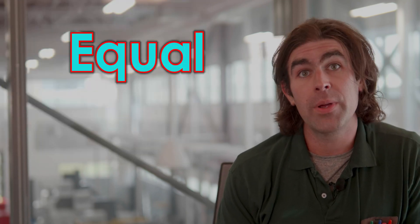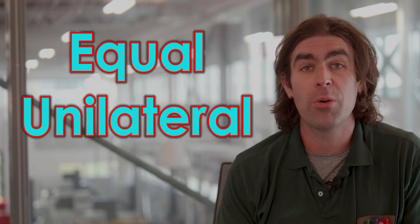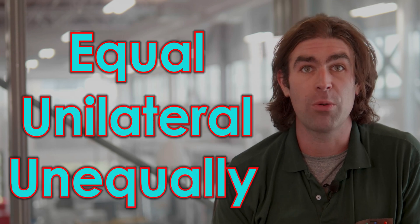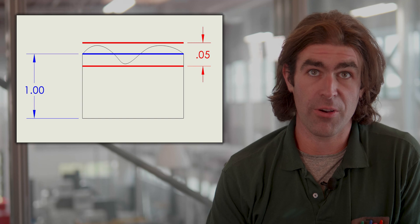Now we can apply the tolerance zone in three different ways. We can apply it equal, we can apply it unilaterally, or we can apply it unequally. The first way is the most common. I refer to it as the default way to apply a profile tolerance. The bilateral equal tolerance zone means you've got equal tolerance on both sides of the true profile.